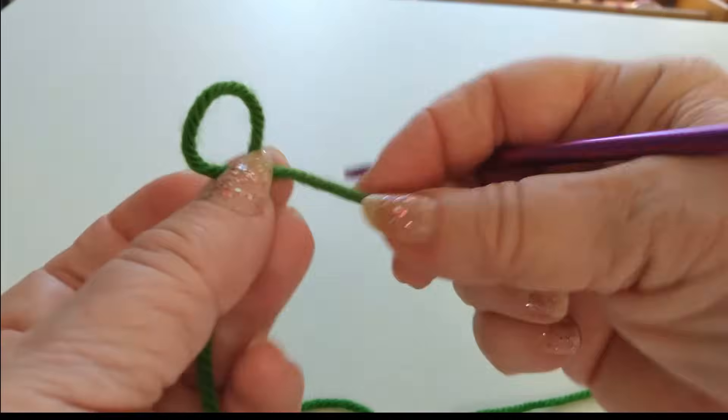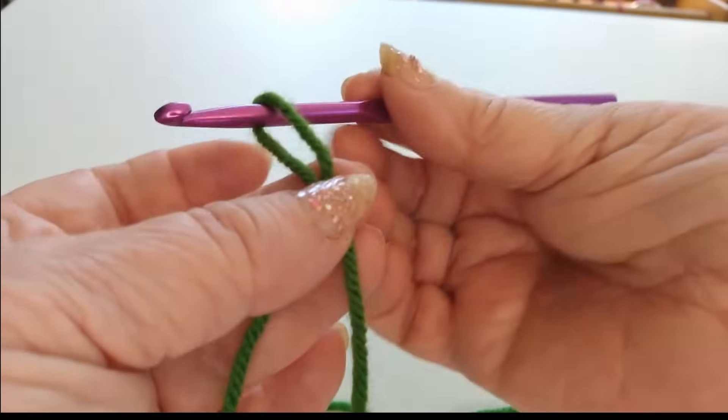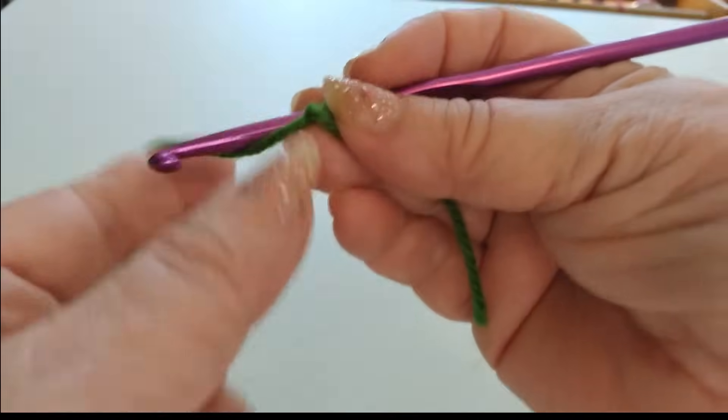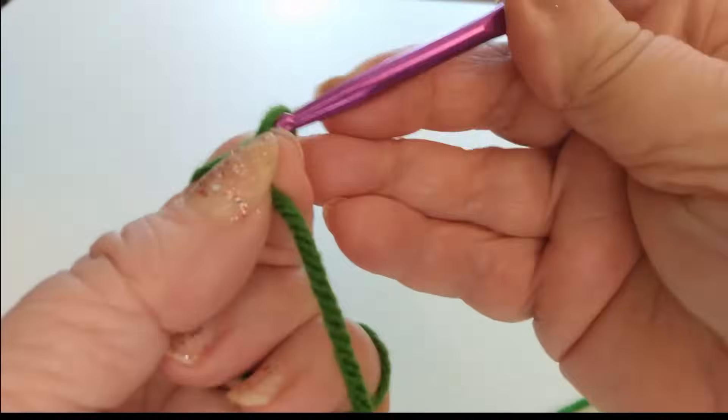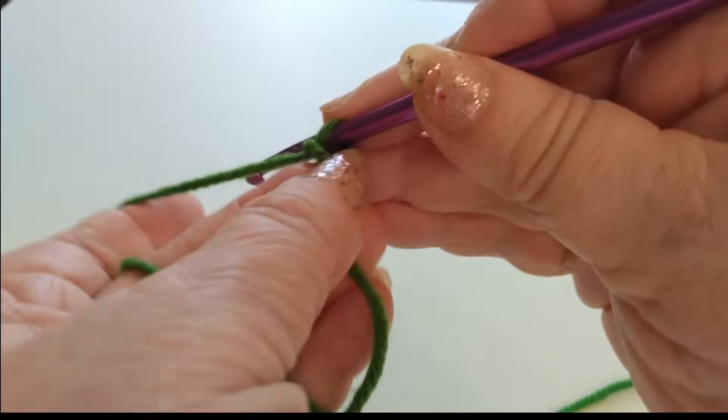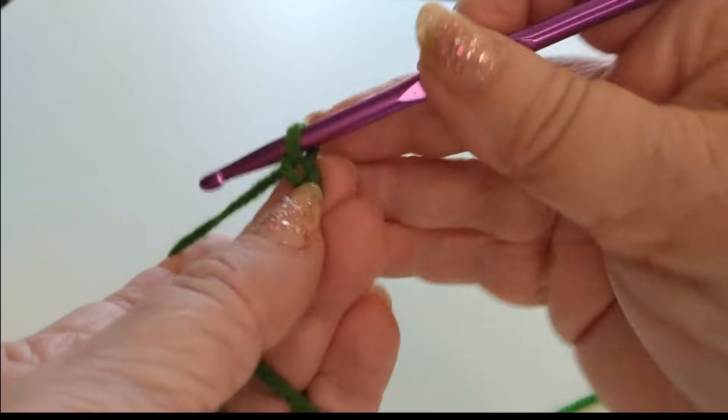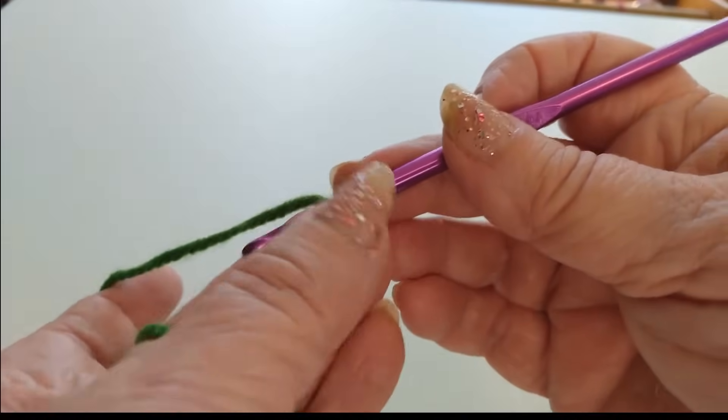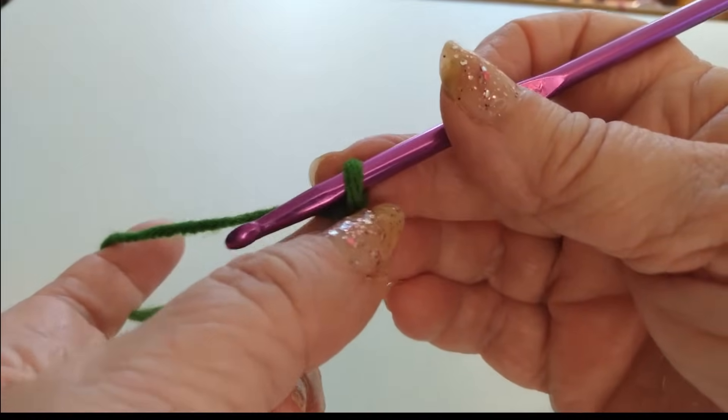I just cross my thread over. I go in the loop and I just under and over and bring it through and then I turn it to the front. And that's my slip knot. And as you can see, it's very simple. Okay, well, let's start our crocheting and we'll do it.